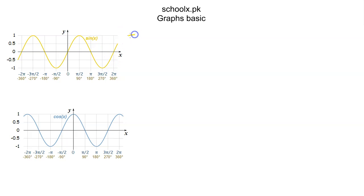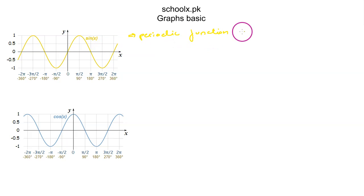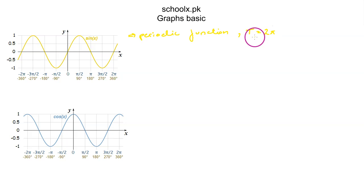Hence the graph of sine is a periodic graph, which means it repeats itself after a certain interval. That interval in this case is 2π, so its time period is 2π. The time period is the time taken for one complete cycle or revolution after which the function repeats itself. So the time period for the sine graph is 2π.